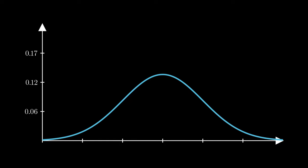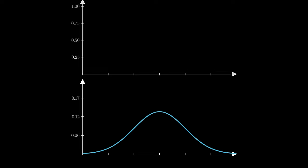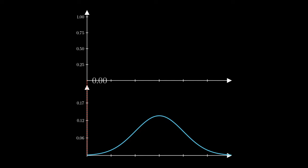But how do we calculate this area? Well, we have the probability density function, the PDF. We're going to need another form of the normal distribution called the CDF.